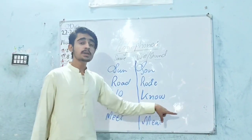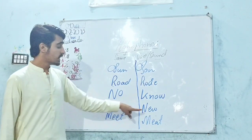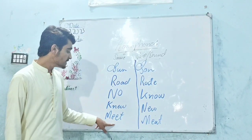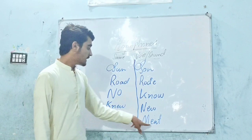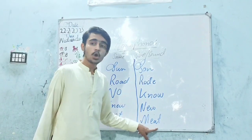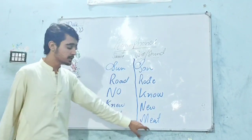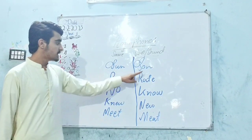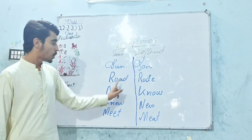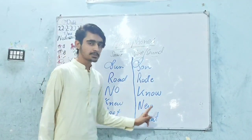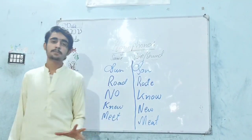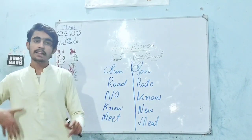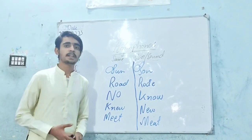New means naya (new), while knew means jana (to know) used in past simple tense. Like this: meat and meet. Meat means gosht (meat/flesh) and meet means milna (to meet someone). See, they are all sounding the same — sun/son, road/rode, no/know, knew/new, meat/meet — but they have different meanings and different spellings.